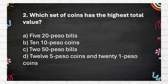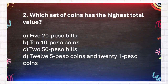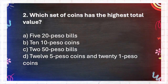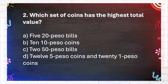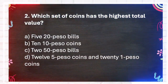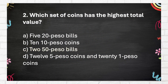Question number 2. Which set of coins has the highest total value? Again, which set of coins has the highest total value? A. 5 twenty-peso bills. B. 10 ten-peso coins. C. 2 fifty-peso bills. D. 12 five-peso coins and 21 one-peso coins. The answer is C: 2 fifty-peso bills.